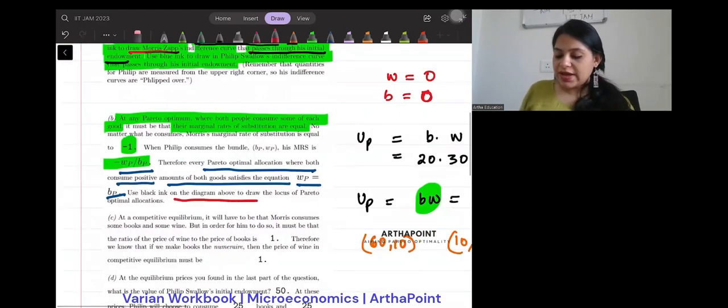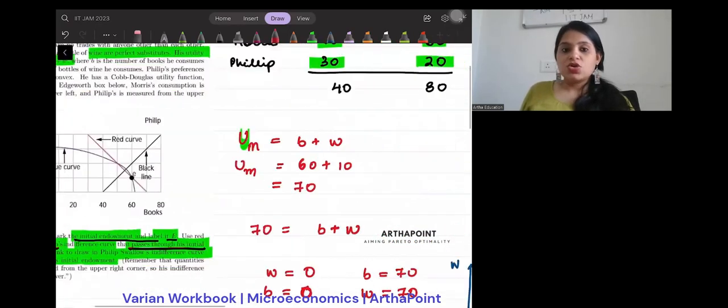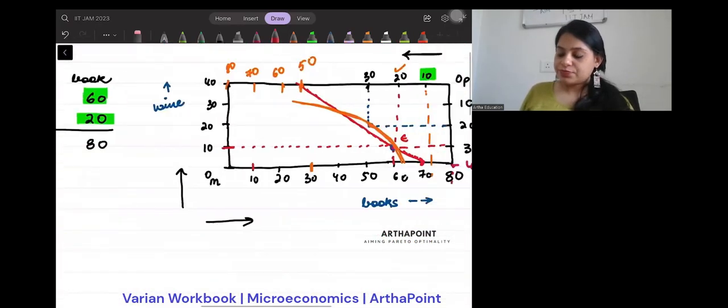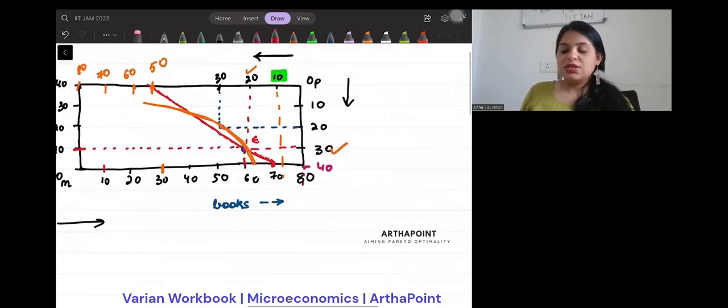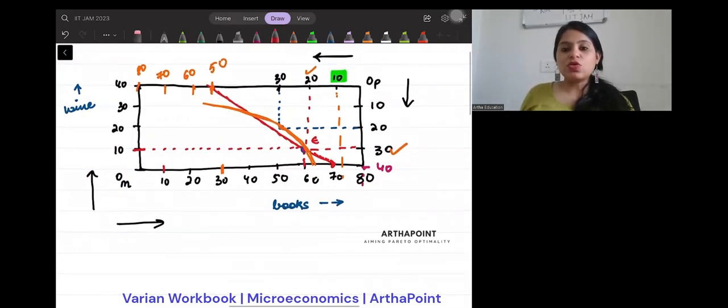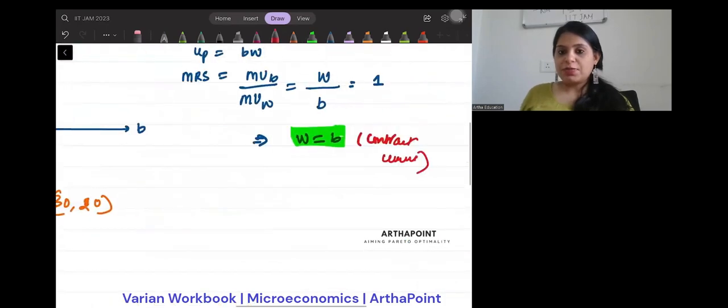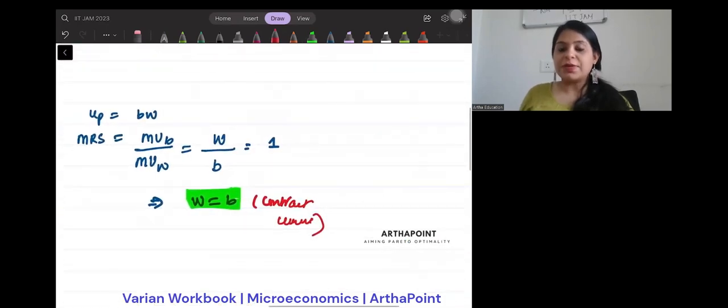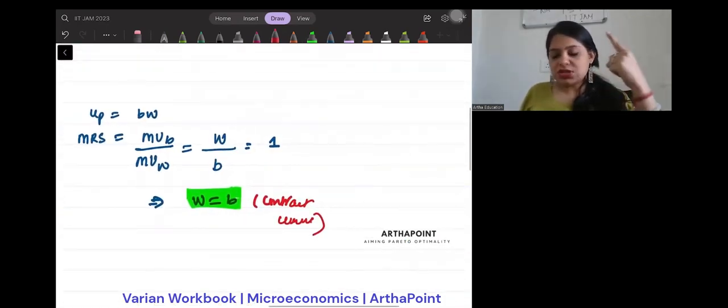Okay. So now it says, use black pen on the diagram above to show the locus of all Pareto-optimal allocation. So if you notice, this is how my Edgeworth box was looking, right?